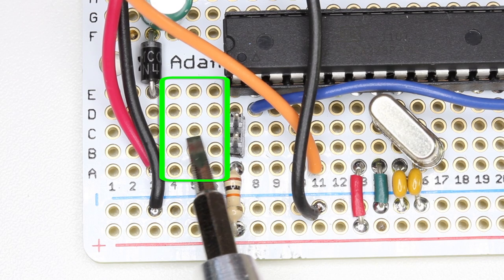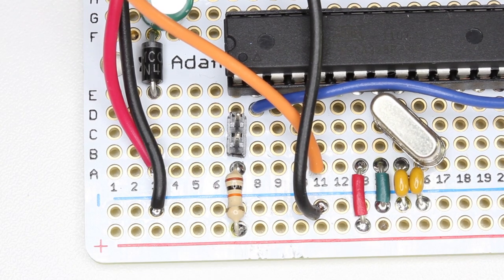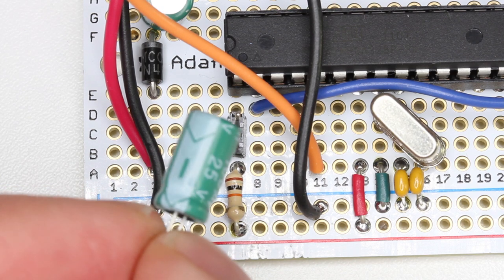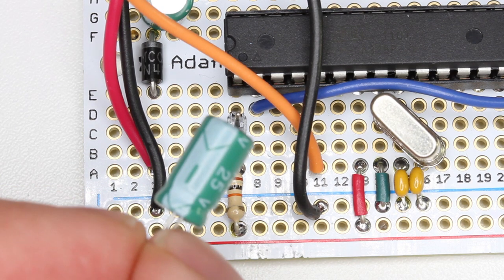First we'll install the 100 microfarad electrolytic capacitor. Electrolytic capacitors are polarized and have a positive and negative side. The negative side of the capacitor is usually marked with a white stripe or a minus sign.